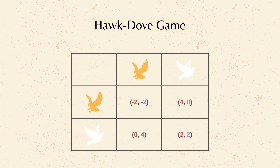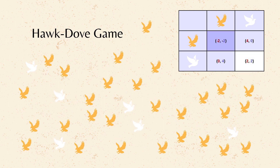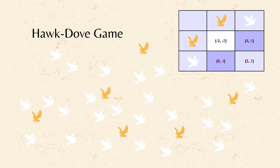The Hawk-Dove Game offers valuable insights into the interplay between competition and cooperation in an evolutionary context. It demonstrates how they can co-exist within a population. Hawks represent the competitive strategy, while Doves represent the cooperative one. The game shows how the strategies can balance each other out under specific conditions. The payoffs in a Hawk-Dove game depend on the composition of the population. If hawks are too common, fighting becomes costly, favoring the doves.